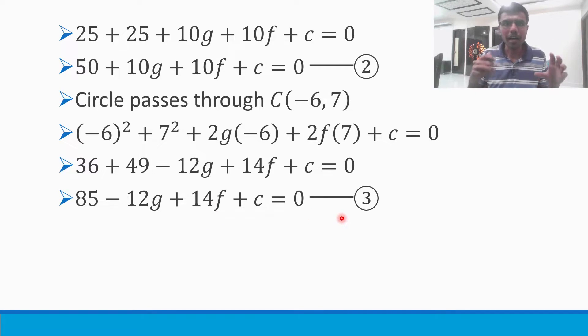Now next, I need to solve these three equations to find out g, f and c. I have three variables—g, f, c—and three equations. What I'm going to do is equation 2 minus equation 1, and then equation 3 minus equation 2, so that I can eliminate c and be left with g and f.